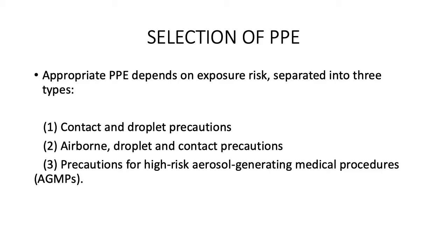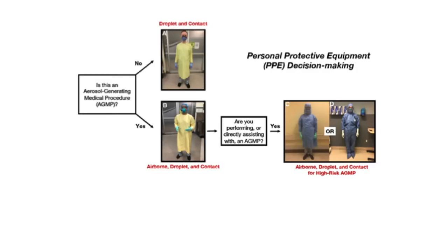We need to use PPE in isolation wards where patients are kept with mild symptoms, and we need to be more cautious in the ICU. Selection of PPE is very important — appropriate PPE depends on exposure risk, separated into three types: first, contact and droplet precaution; second, airborne, droplet, and contact precaution when there are chances of smaller droplets; and third, precaution for high-risk aerosol generating medical procedures.